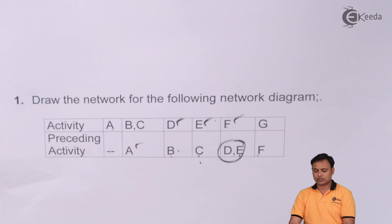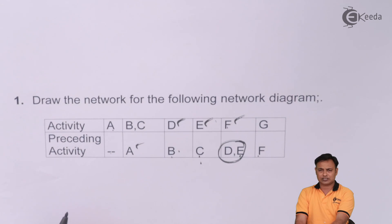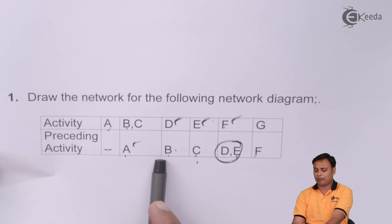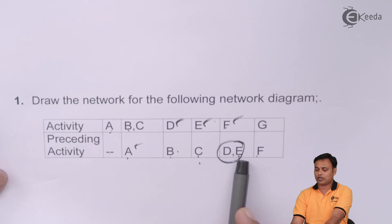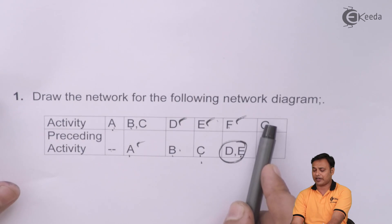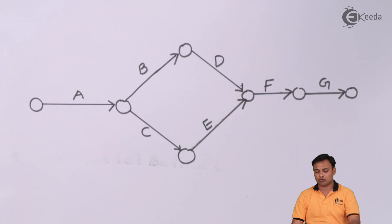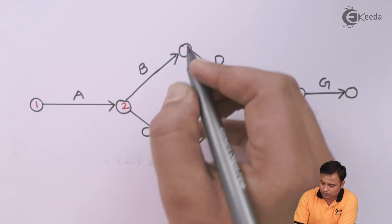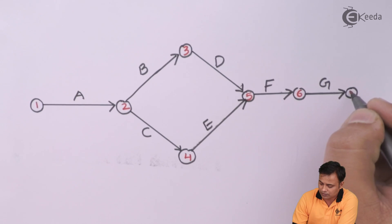So here is our original question. We will check once again whether the diagram is accurate. A is the initial activity. A ke baad B and C — mera A ke baad B and C. B ke baad D, C ke baad E. D and E combine hue, wahan se nikla F. And at last, F ke baad mera final activity — the terminal activity — G. These circles are called nodes, and I will number them: 1, 2, 3, 4, 5, 6, and 7.